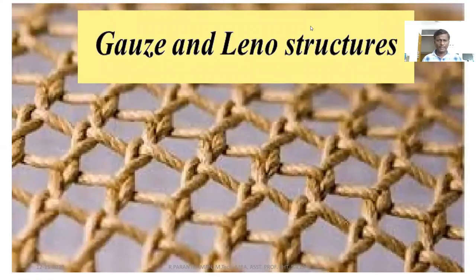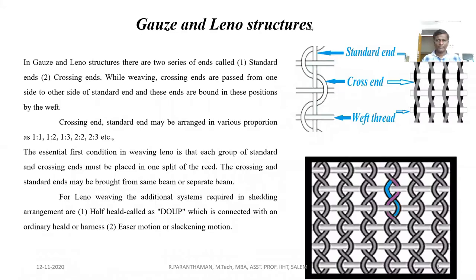Today our topic is Gauze and Leno Structures. In Gauze and Leno Structures, we are using two kinds of warp threads. The two kinds of warp threads are: one is the standard end and another one is the crossing end. The crossing end passes left to right and right to left relative to the standard end.